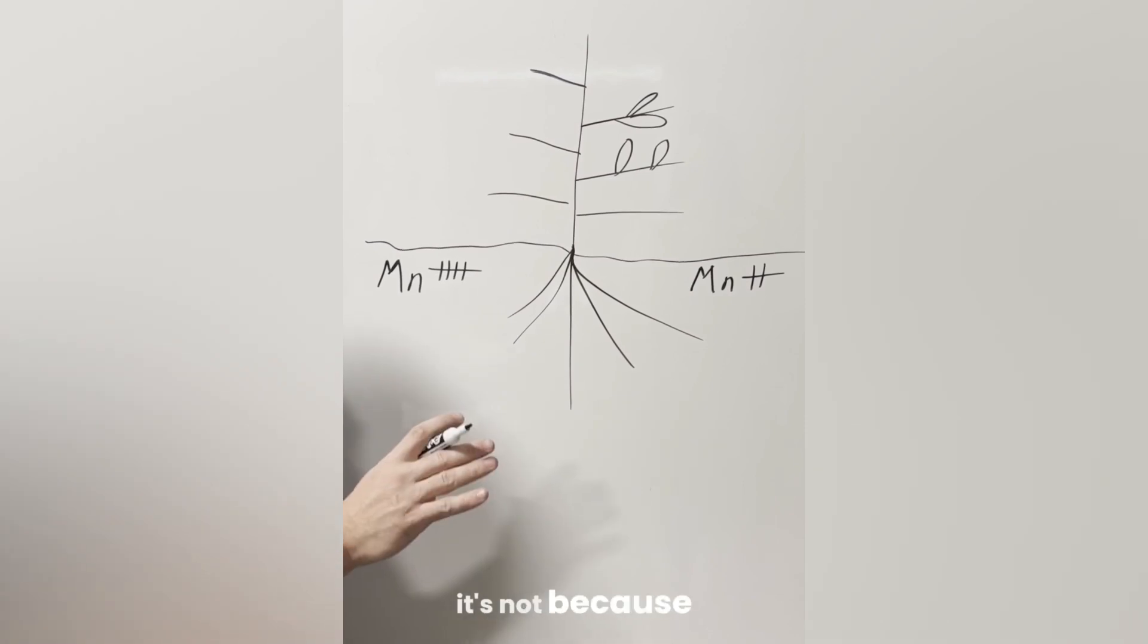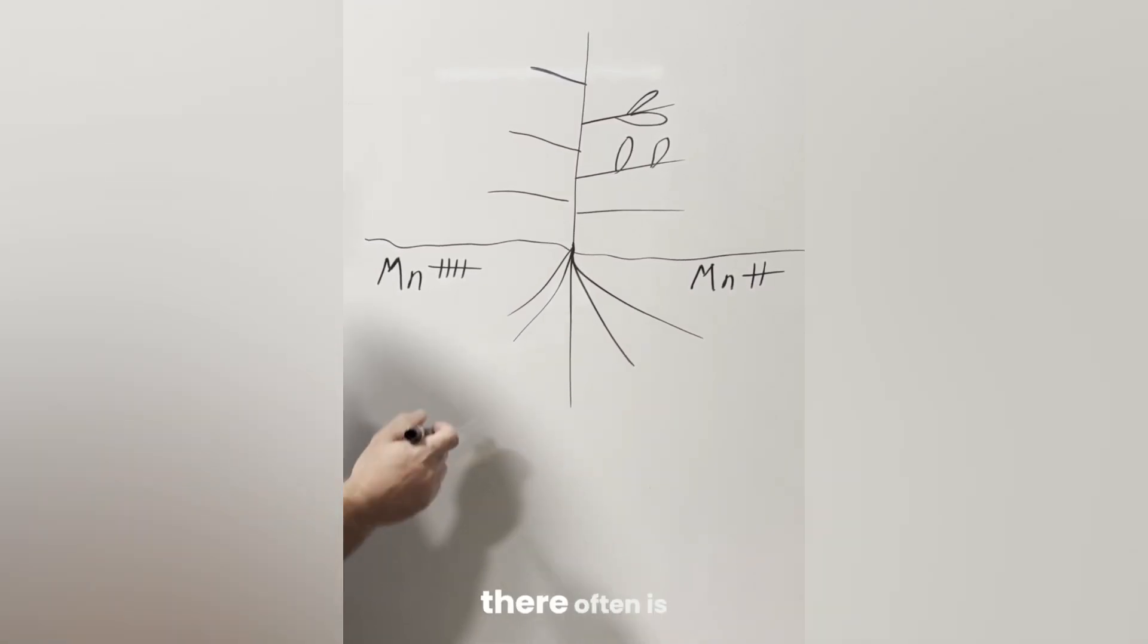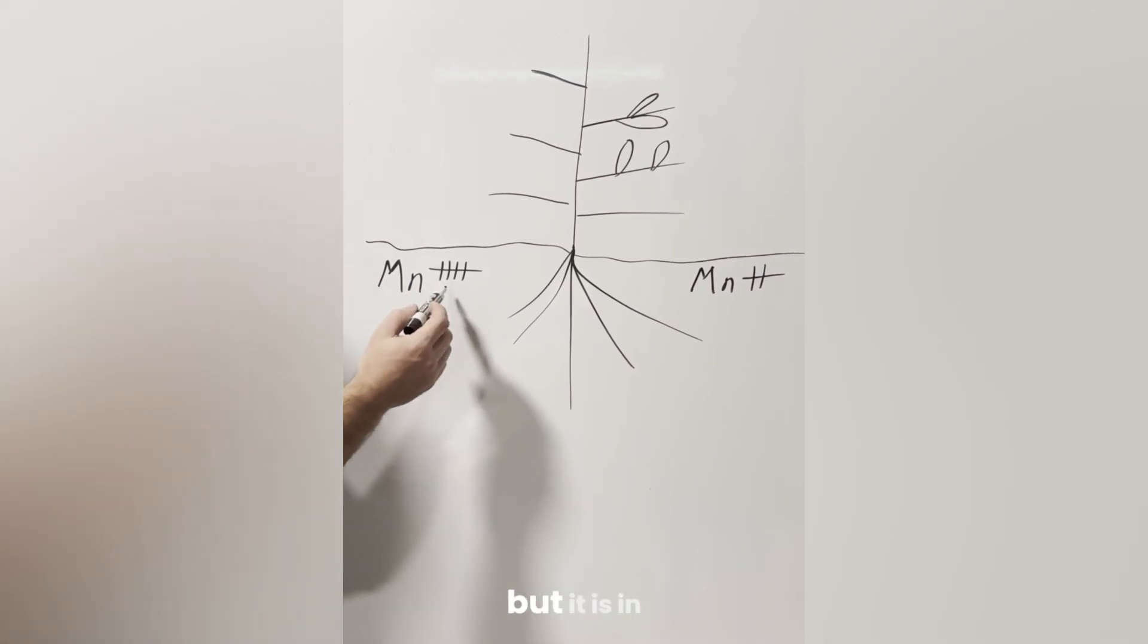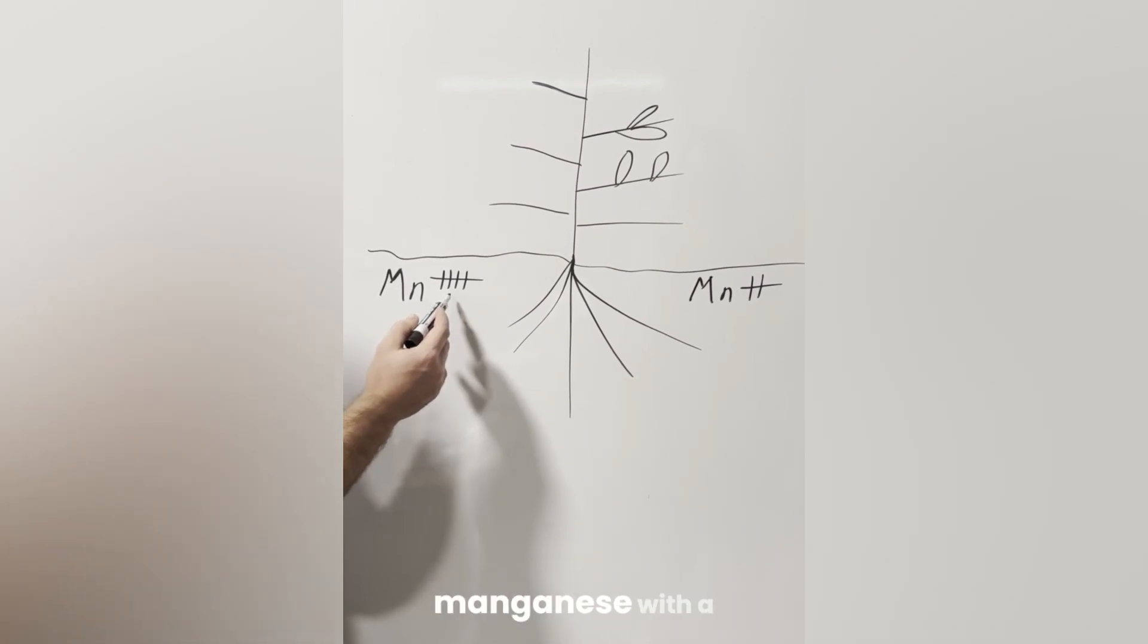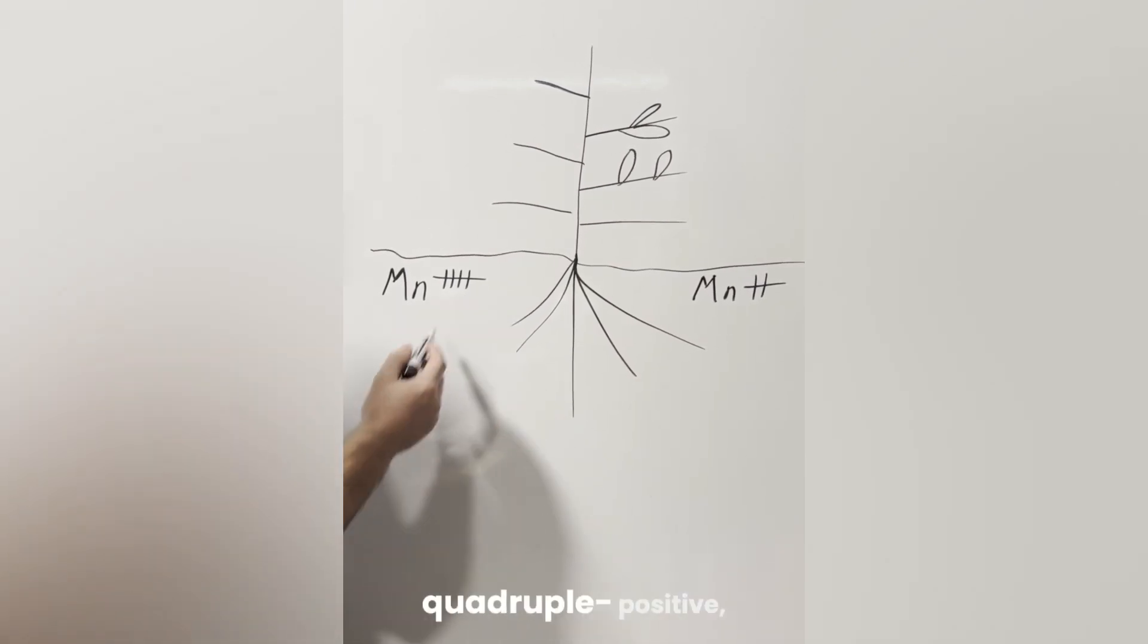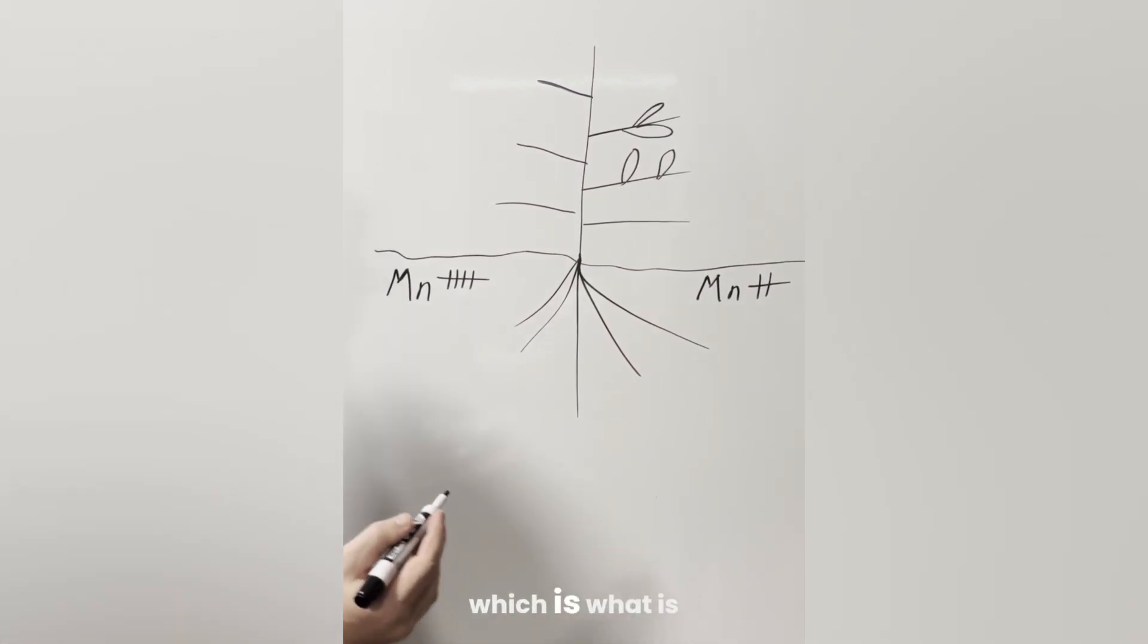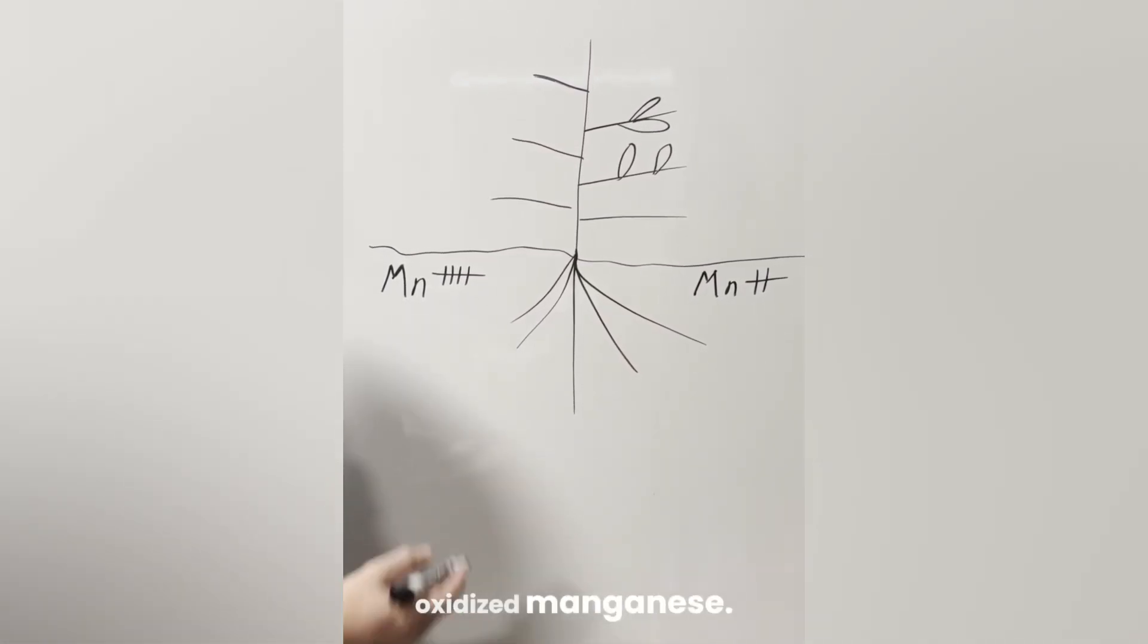And in many cases it's not because there isn't enough manganese in the soil, there often is abundant manganese, but it is in the incorrect oxidation state. You very often have various manganese oxides, manganese with a triple positive or a quadruple positive, which is what is referred to as oxidized manganese, manganese oxide.